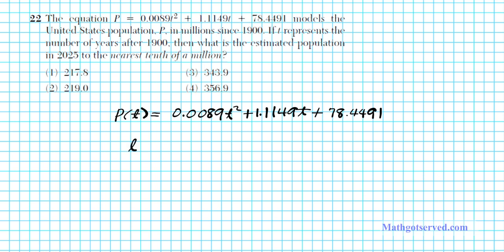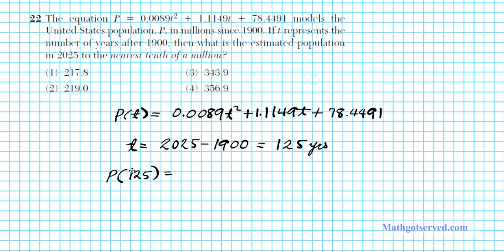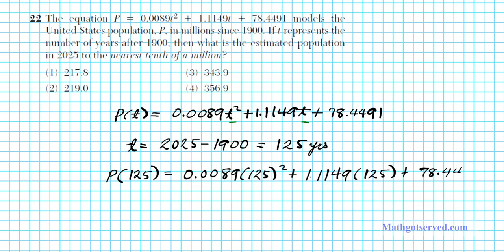So let's go ahead and find t. It says t is the number of years after 1900. What we simply do is take the final year 2025 minus the initial year 1900, and the difference tells us how many years after 1900 takes you to 2025. If you compute the difference, you have 125 years — so that is what t is. So the population in 2025 is p of 125, meaning we substitute 125 wherever we have t in the model. So we have 0.0089 times 125 squared plus 1.1149 times 125 plus 78.4491.